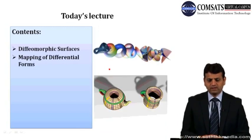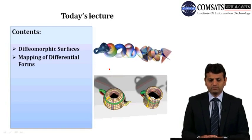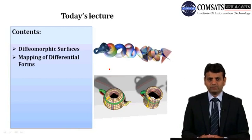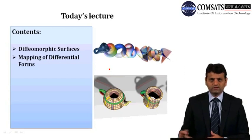In today's lecture, we will see when there is a diffeomorphism between two surfaces, or in other words, when two surfaces are diffeomorphic. After that, we will see that given any mapping between two surfaces, how we can map zero forms, one forms, and two forms from one surface to the other. So on one surface we can define zero forms, one forms, and two forms, and we will study what happens to them under this mapping.